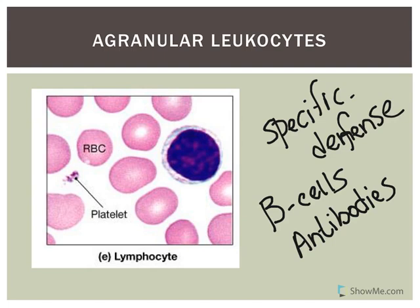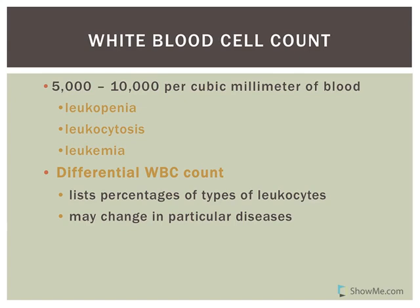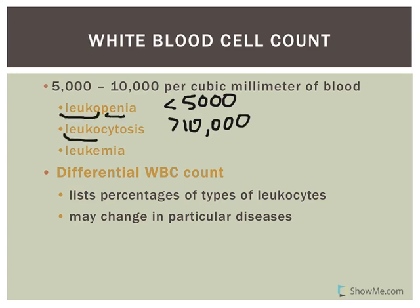When looking at a blood smear and counting white blood cells, a differential white cell count determines the relative proportion of each type. We know the normal distribution, and if it's abnormal it can indicate certain conditions. If someone has leukopenia, their white cell count is less than 5,000 per cubic millimeter of blood. Leukocytosis is when the white cell count is greater than 10,000 — meaning too many white blood cells.